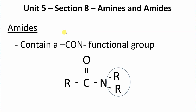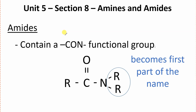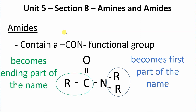When we go to name an amide, the stuff over here is going to become the first part of our name. There doesn't always necessarily need to be chains there, but anyway, that will become the first part. And then, this part — the carbon chain — is going to become our ending part.